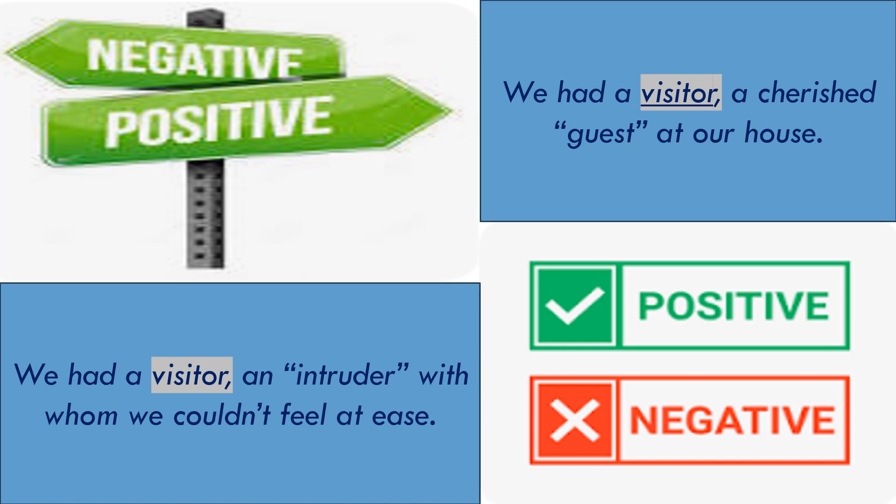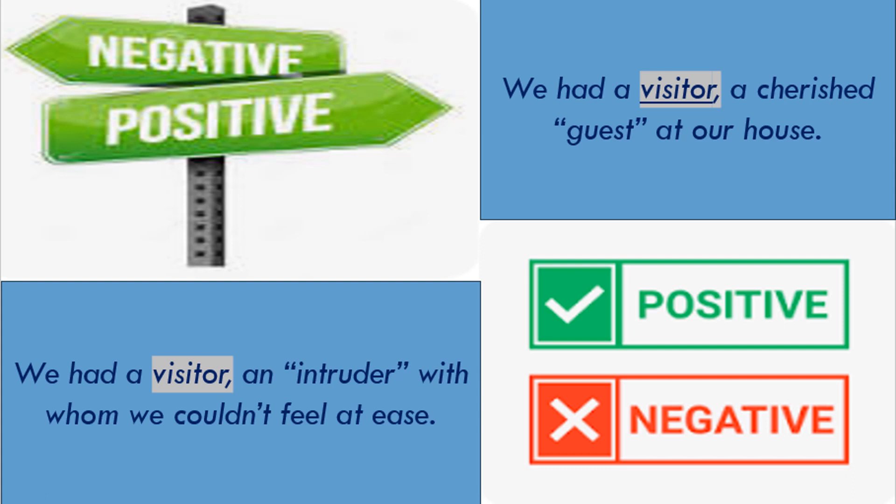I didn't see you at the party yesterday. We had a visitor, a church guest at our house. The word visitor in both sentences indicates a feeling. In the first sentence, 'we had a visitor, a church guest at our house' is a positive feeling, while in the second one, 'we had a visitor, an intruder' is indicating a negative feeling. So one word can give a positive or a negative feeling.